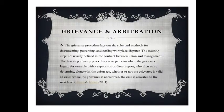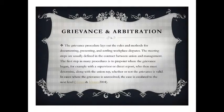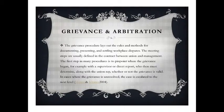Putting both terminologies together, the grievance procedure lays out the rules and methods for documenting, presenting, and settling a workplace dispute. The meeting steps are usually defined in the contract between the union and management. The first step in many procedures is to pinpoint where the grievance began — for example, with a supervisor or direct report — who must then determine along with the union rep whether the grievance is valid. The next level is where arbitration takes place, generally intended to streamline the process, decrease costs compared to resolving a dispute in court, and provide a more informal, time-saving, and cost-effective method for resolving a potential legal dispute.